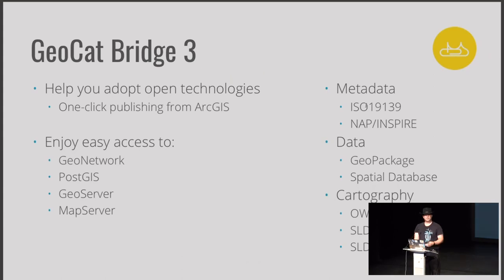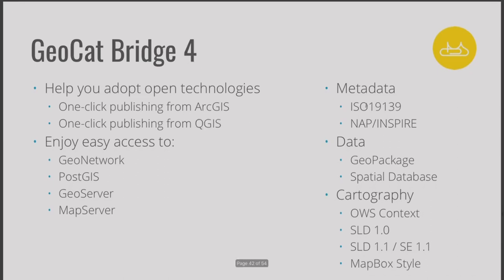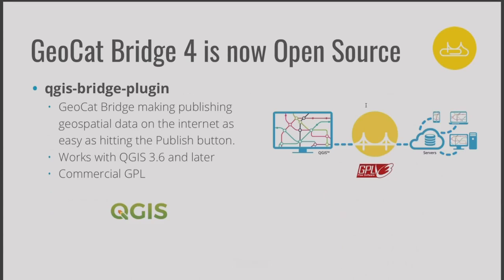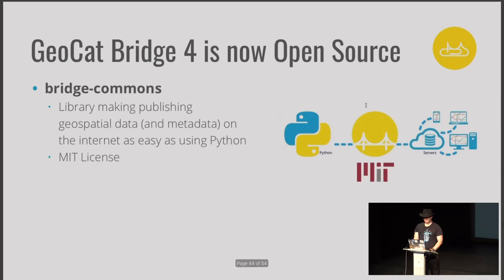GeoCat Bridge 3 helped folks using ArcGIS ArcMap to publish to GeoServer, PostGIS, and MapServer. This week at this conference, we're announcing GeoCat Bridge 4 — a plug-in for QGIS offering that similar experience for our QGIS community. We are also making this available as an open source project — the QGIS plug-in is a commercial GPL project with source code available. We're also defining a Python library called Bridge Commons, making publishing of geospatial data available to Python.